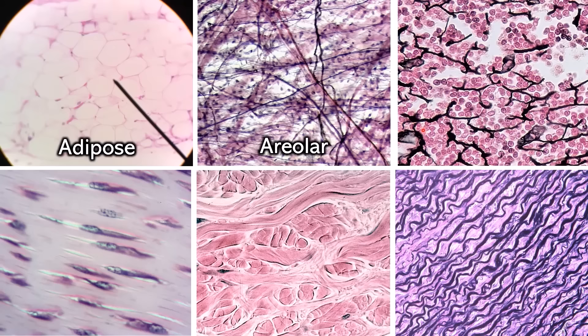If you compare these black thready fibers to the fibers you're seeing in the areolar, you'll notice that they look more like a net and more like a mesh, whereas the areolar ones are very straight. Those are the reticular fibers — so this is reticular connective tissue, and this is the one where you need a special stain to see it. When you're first learning, usually the example they show you is a lymph node, and in a lymph node you have lots of circular cells, which are also a hint that this is reticular.